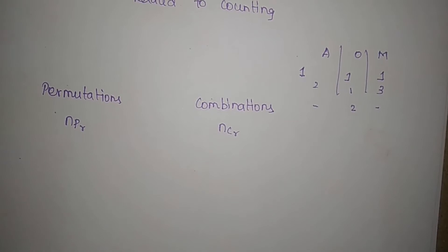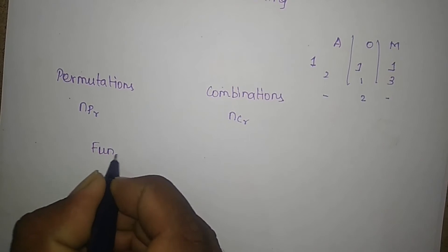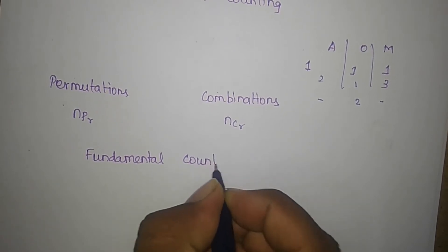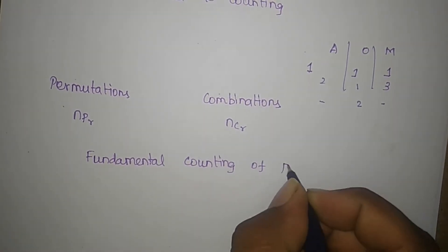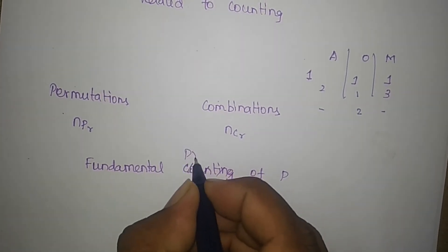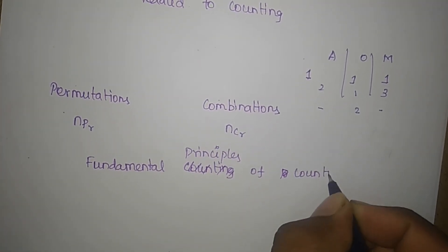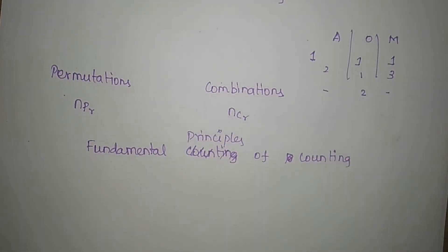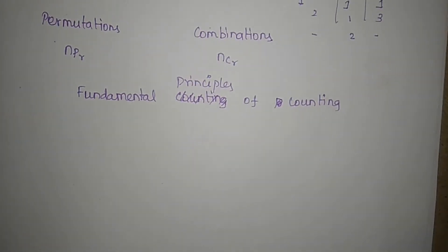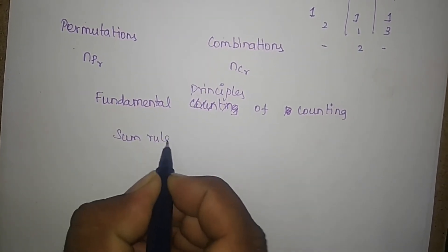The combinations of counting — here is the fundamental principles of counting. So some major rules: the sum rule and the product rule.